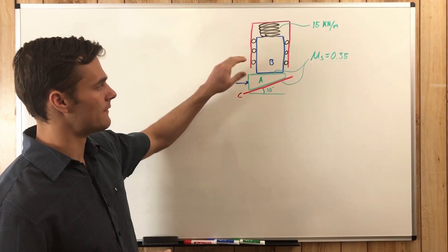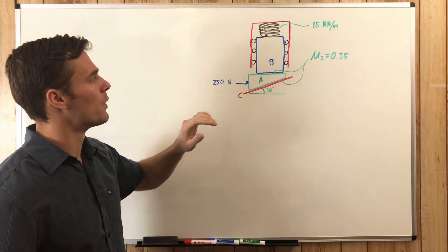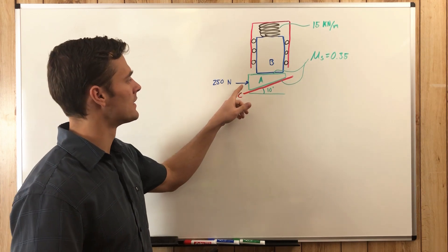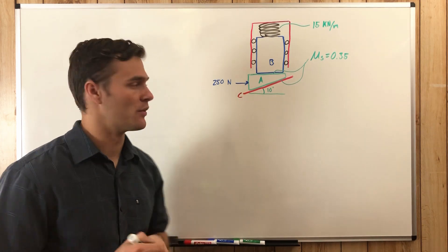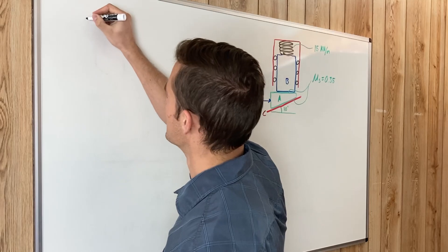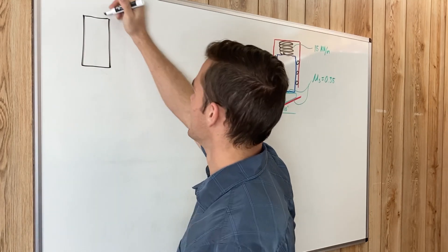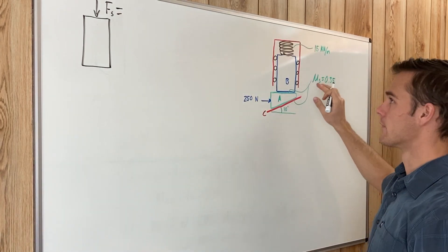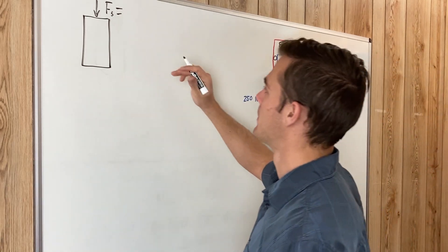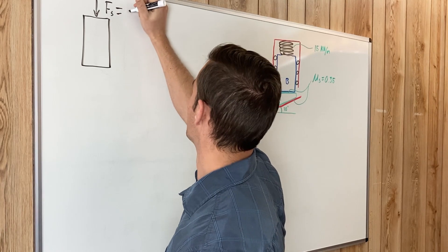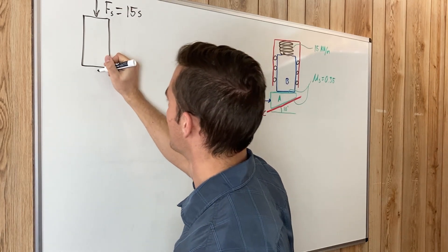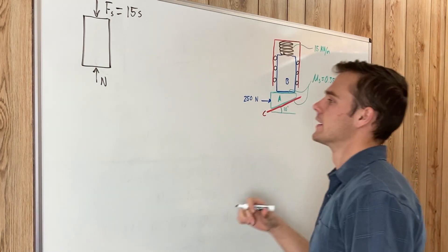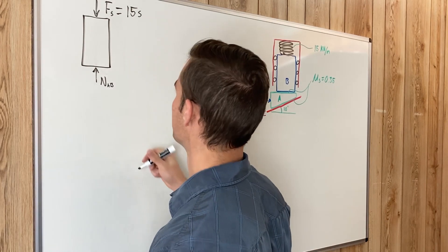In this problem we split it up into the free body diagram of the cylinder and the wedge. What we need to find is the compression of the spring required to keep this wedge in equilibrium. For the cylinder FBD, the spring force pushing down is 15 kilonewtons per meter multiplied by the compression S, so 15S. It is pushed up by normal force NAB, acting between points A and B.